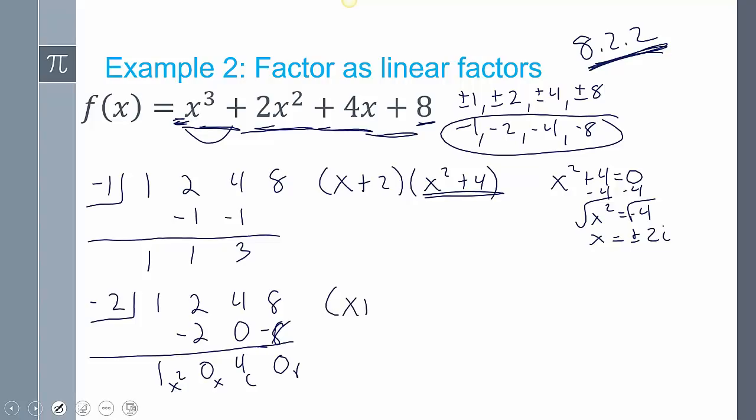So I can write this as x plus 2, times x minus 2i, and x minus negative 2i. That's going to be my factored polynomial. You can use imaginary values. It doesn't have to be real values at all. This is factoring a polynomial in the complex domain, not just the real domain, which includes both real and imaginary.